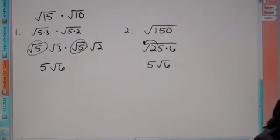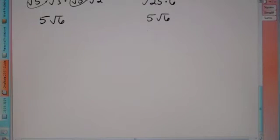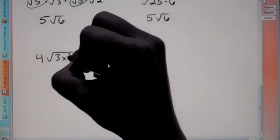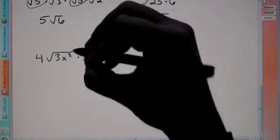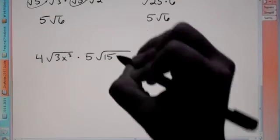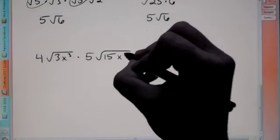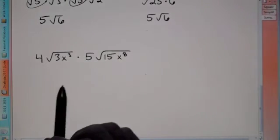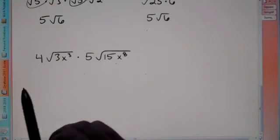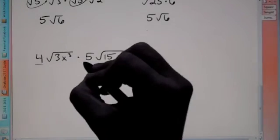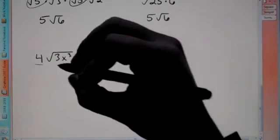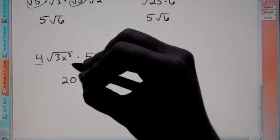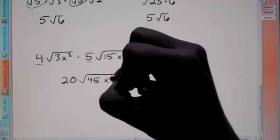Now let's multiply 4 root 3x cubed times 5 root 15x to the eighth. For a problem like this, I like to multiply first underneath and then break it down. Always deal with the numbers in front first: 4 times 5 gives us 20. On the inside we have 3 times 15, which is 45. X to the third times x to the eighth is x to the eleventh.